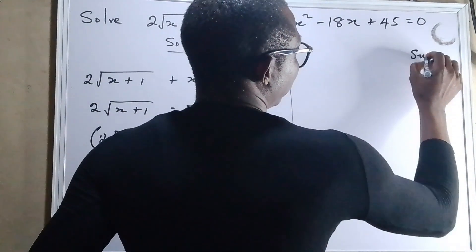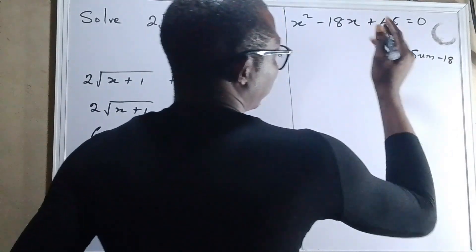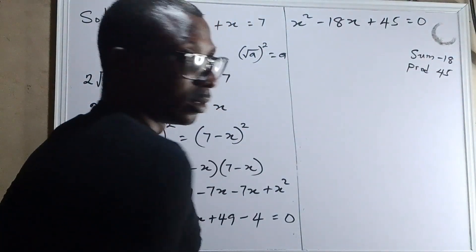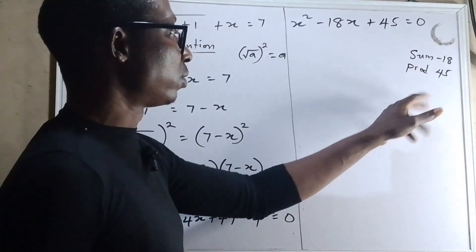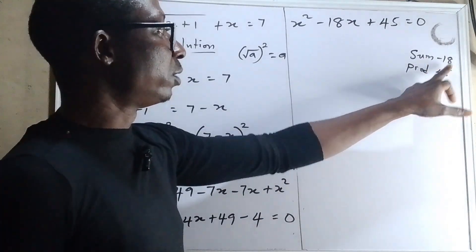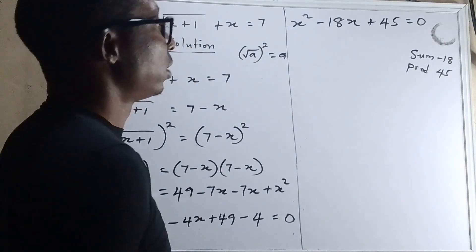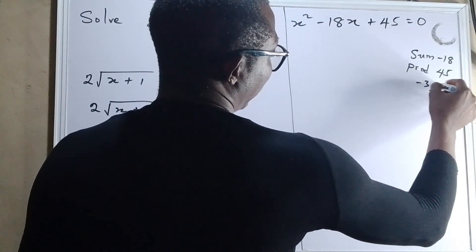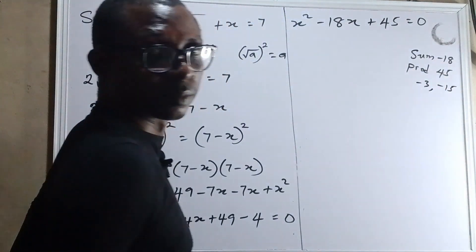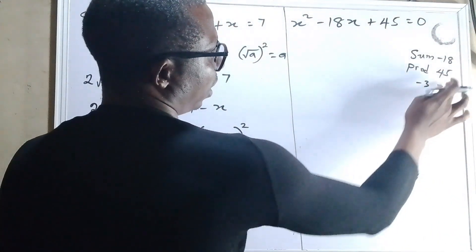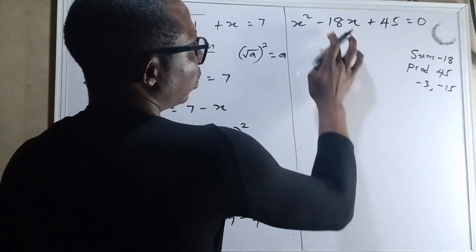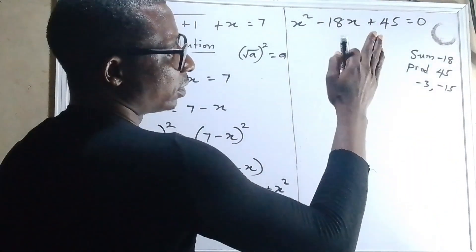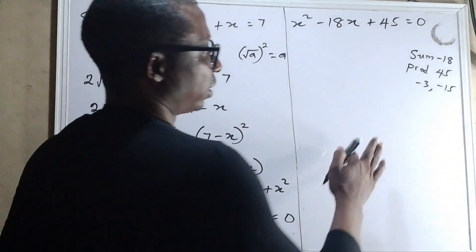Let's solve. The sum in this equation is minus 18 while the product is 45. So let's look for two numbers such that when you multiply them together you have 45, and when you add them together you have minus 18. The two numbers are minus 3 and minus 15. So we split minus 18x into minus 3x minus 15x.